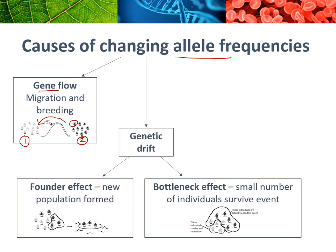Then there's genetic drift, which has two different examples. One is called the founder effect — that's when a small group of individuals form a new population in a new place where that species didn't previously exist. This new population doesn't represent the original population because it only had a small amount of genetic variation in it.